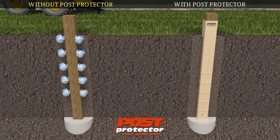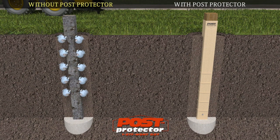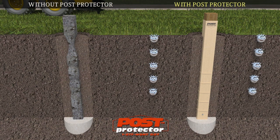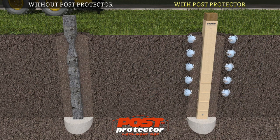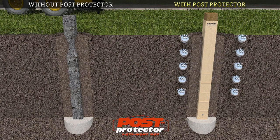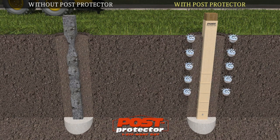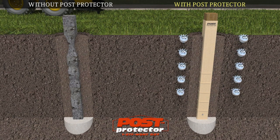When an unprotected post is placed in the soil, it's only a matter of time before these wood-destroying organisms find their way around or through chemical preservatives, causing decay. The Post Protector Barrier System will substantially increase the life of any post by acting as a new line of defense separating the wood from attacking organisms, while preventing chemical preservatives from leaching into the environment.